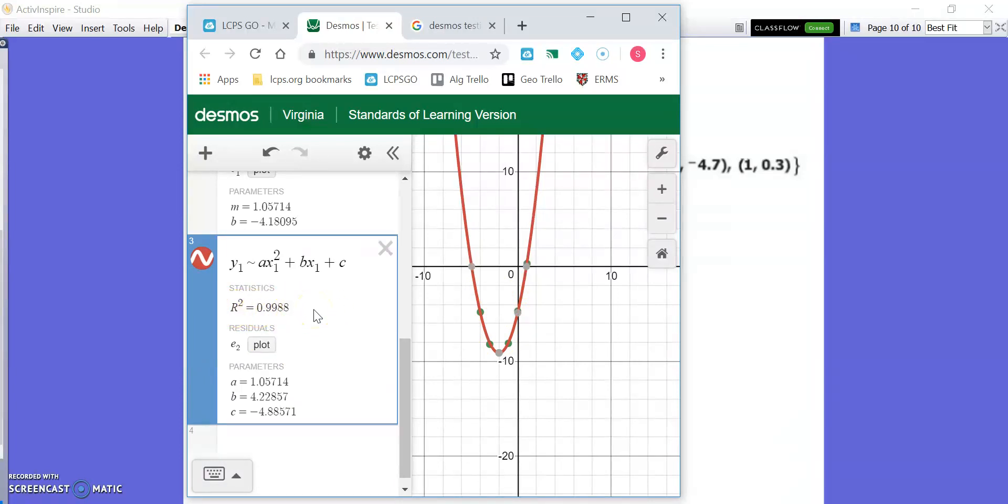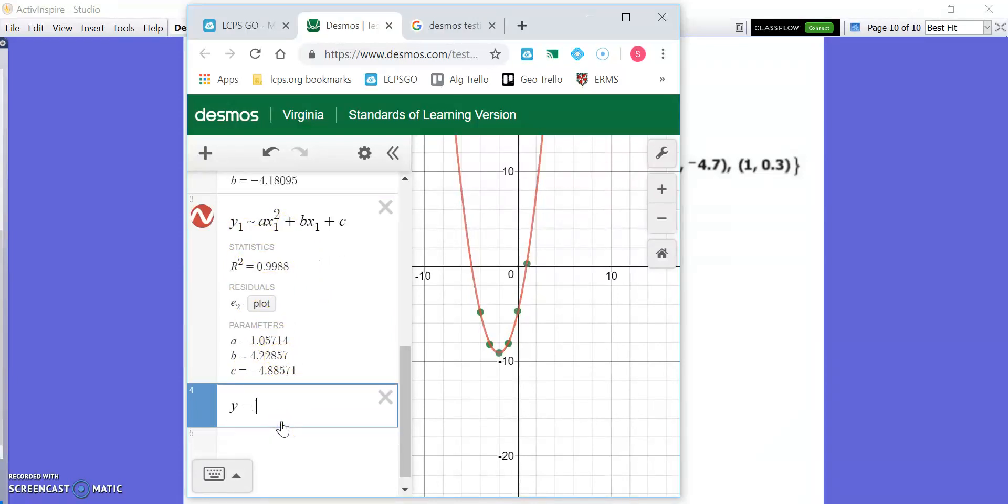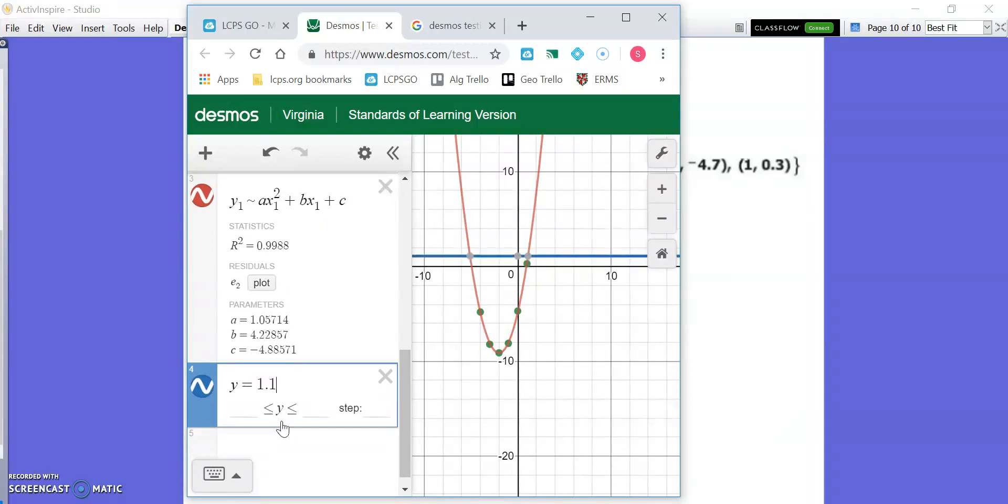The other way you can tell is the r squared value - I believe that's the correlation coefficient or coefficient of determination. I always forget which one's r and which one's r squared. Anyway, it's 0.99. We want that to be close to 1. That's really close to 1. That's really good. We're going to use this stuff to come up with our equation. We're putting this in for a, this for b, this for c. Instead of y₁ and x₁, it's just going to be y and x. Instead of tilde, it's going to be equal sign.